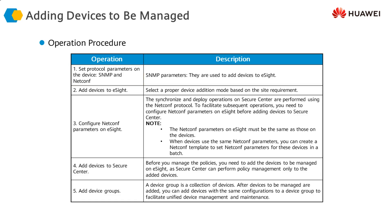If you want to add a firewall, we need to configure certain parameters on both the firewall and the NMS. On the firewall, we need to configure the protocol parameters for SNMP. Then we add devices to the eSight server. If we need to configure NetConf, we can configure it on both the firewall and the eSight NMS side. Then we can add the devices to the Secure Center, which is the security component sitting on top of eSight.